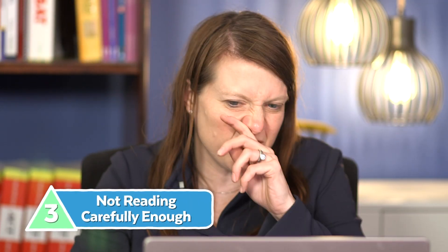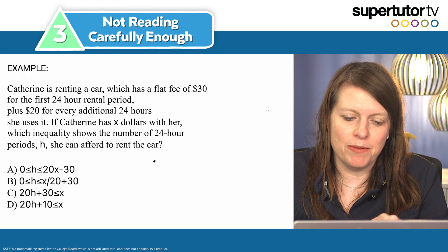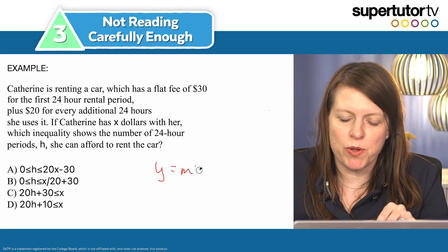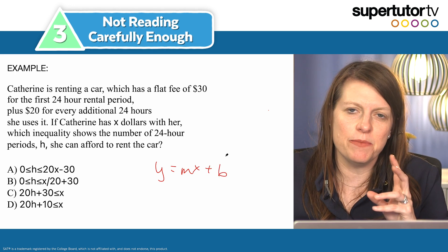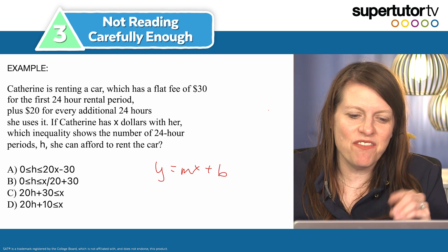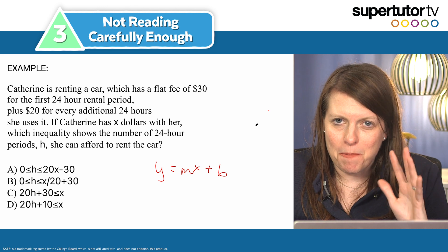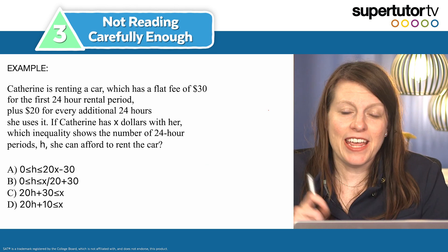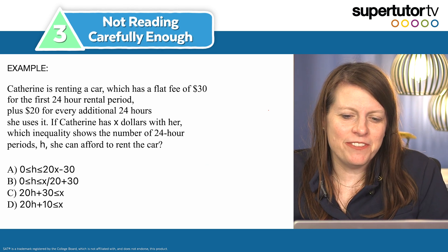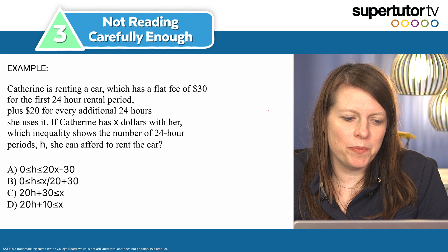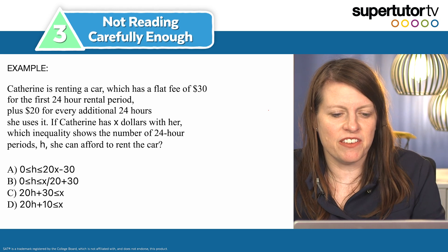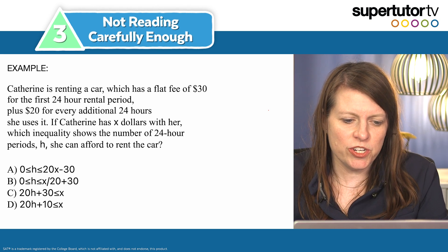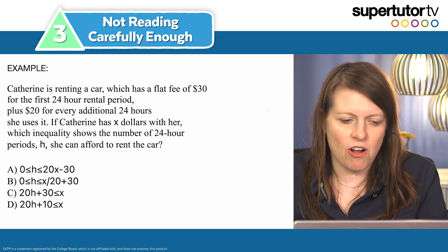The third mistake is that students don't read carefully enough. There are word problems like y = mx + b word problems, and one of the classic tricks the SAT pulls is that they mess with you a little bit. For example: Catherine is renting a car which has a flat fee of $30 for the first 24-hour rental period plus $20 for every additional 24 hours she uses it. Catherine has x dollars — which inequality shows the number of 24-hour periods h she can afford to rent the car?